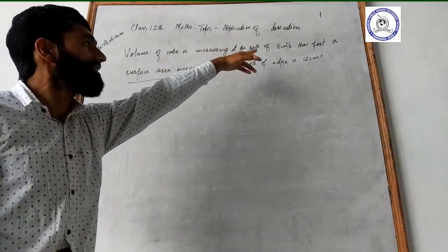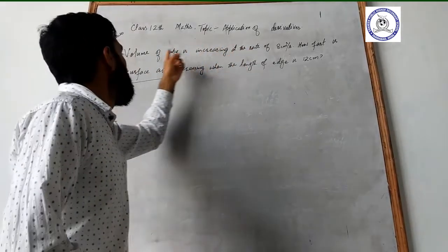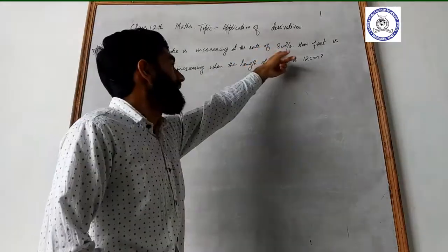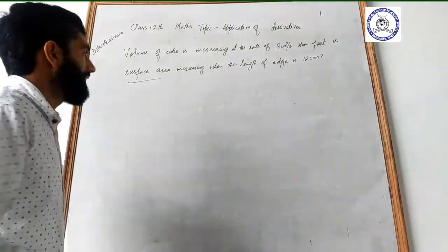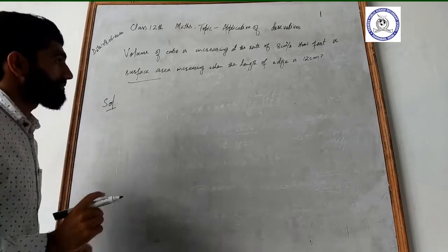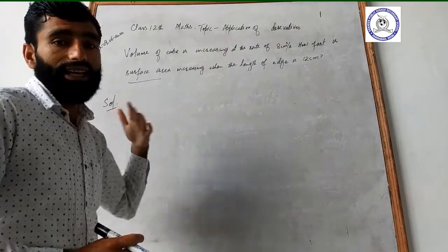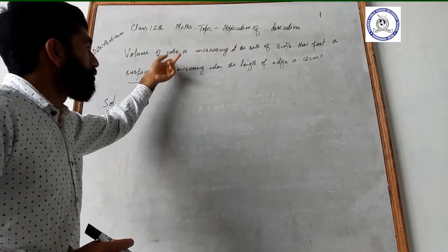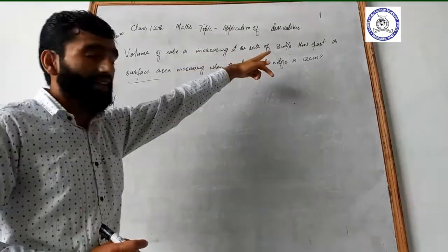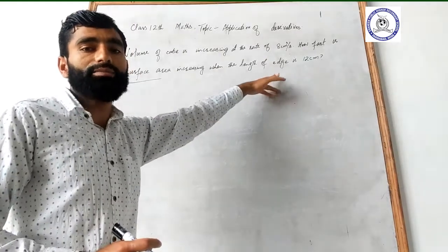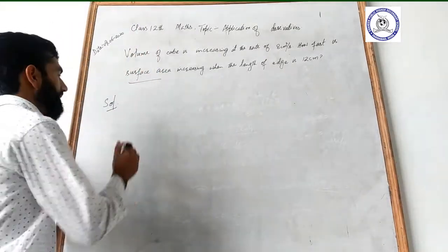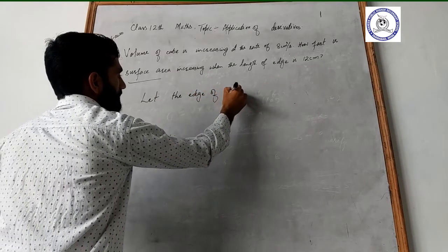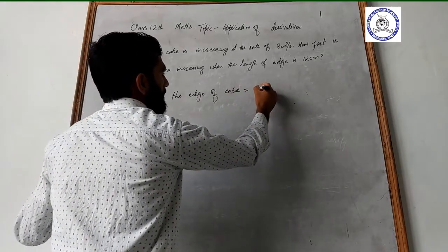The volume of cube is increasing at the rate of 8 cm³ per second. Let the edge of the cube be equal to x.